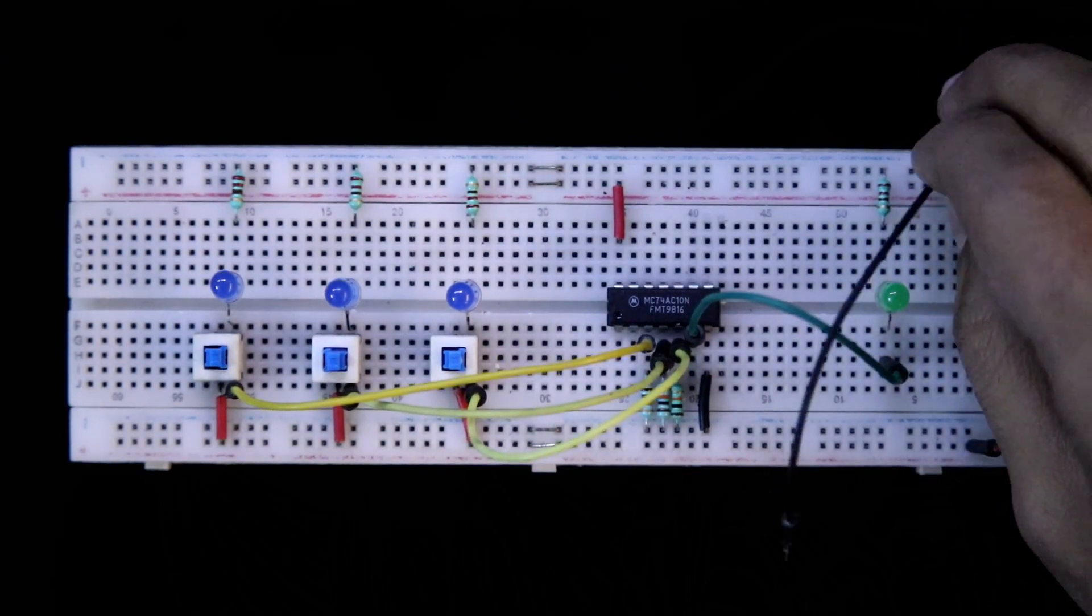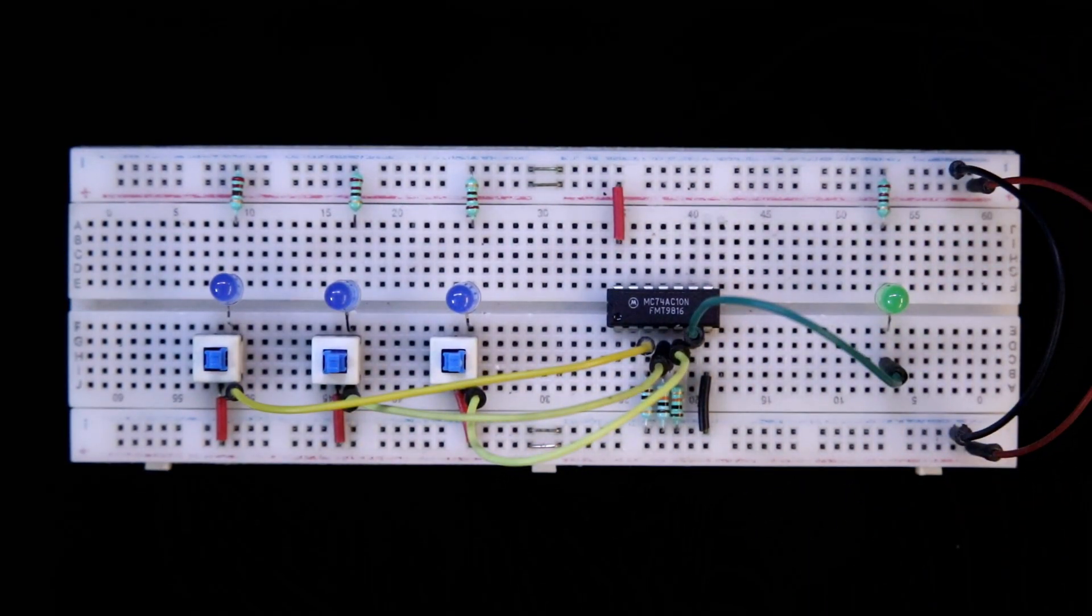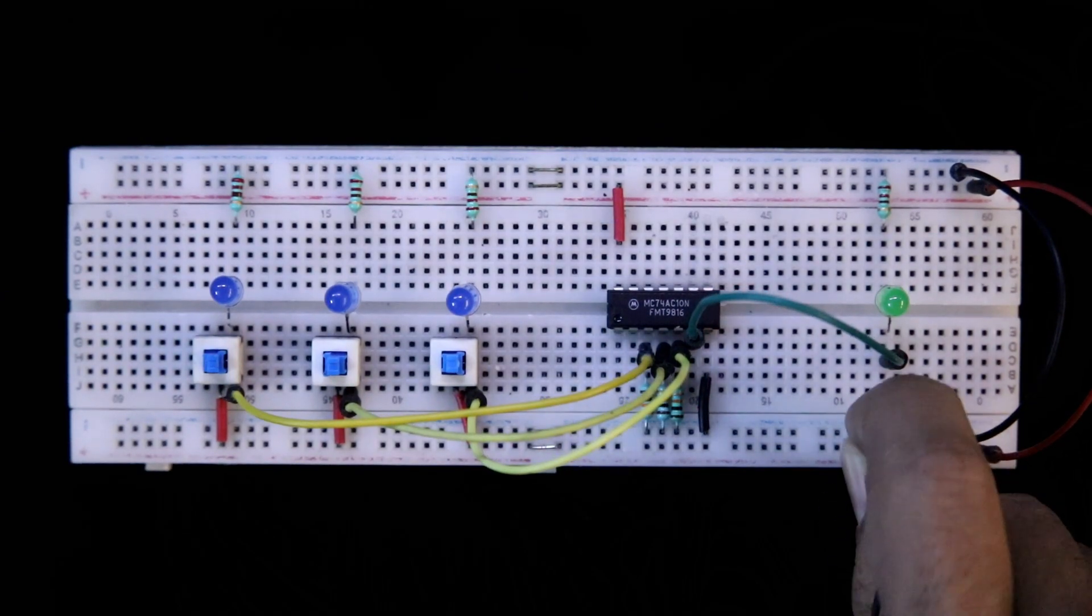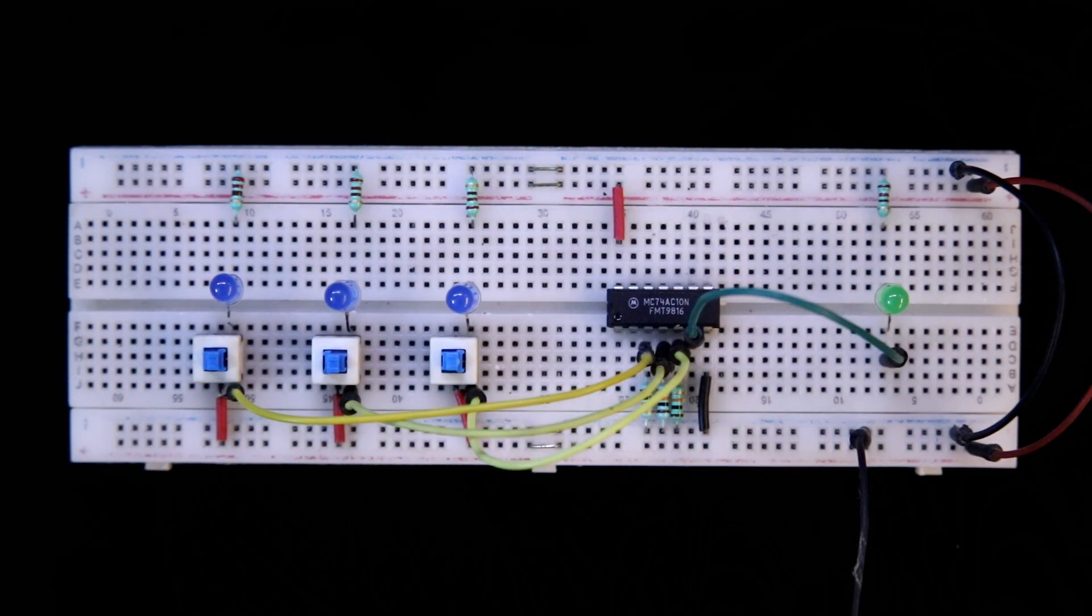Now connecting both the positive and negative rails. Connecting the 5 volt power supply. This is the negative and this is the positive.